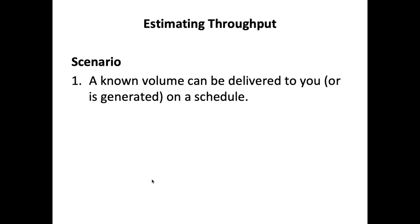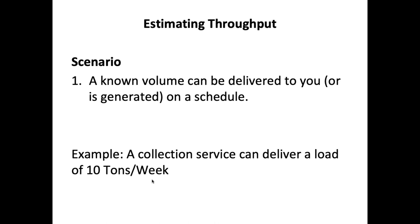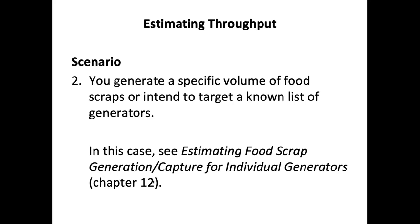Scenario one: a certain amount of material can be delivered to you — for example, a hauler has a 10-ton load they need a home for, or you are a grocery store generating two tons per week on a regular basis. These are the simplest scenarios for estimating throughput. Scenario two: you generate a specific volume of food scraps or intend to target a known list of generators — for example, in a rural area you've got an elementary school, a small grocery, a café, and three or four businesses, and you can estimate how much material is coming from each.